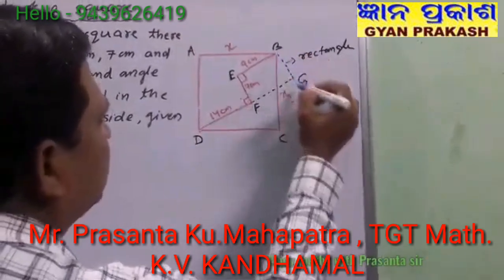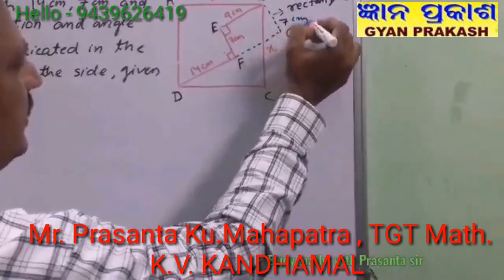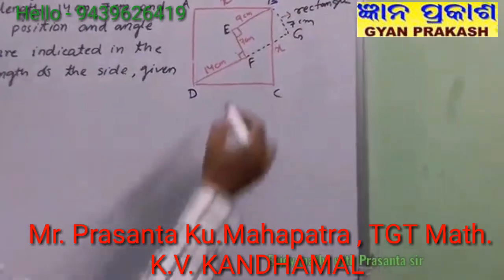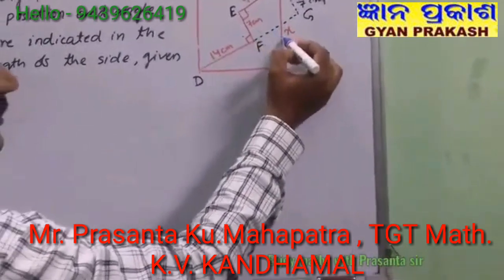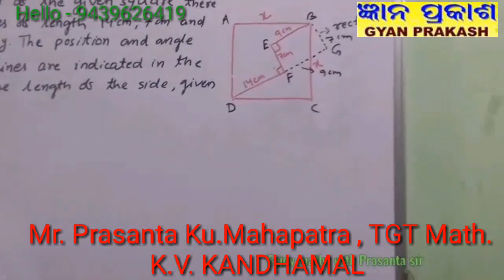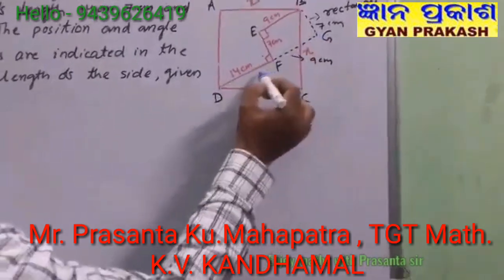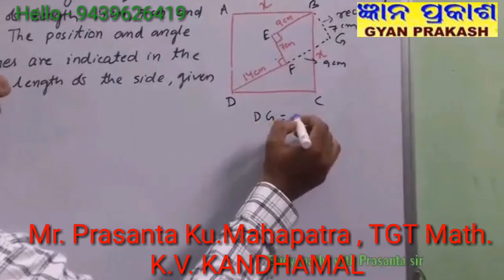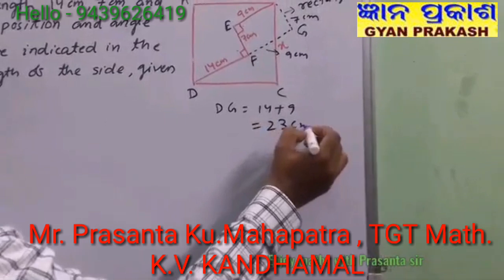What will be the side BG? It will be equal to 7 cm. And what will be the side EB? This will be equal to FG, so FG becomes 9 cm. And what is DG? DG is equal to DF plus FG, that is 14 plus 9, which equals 23 cm.